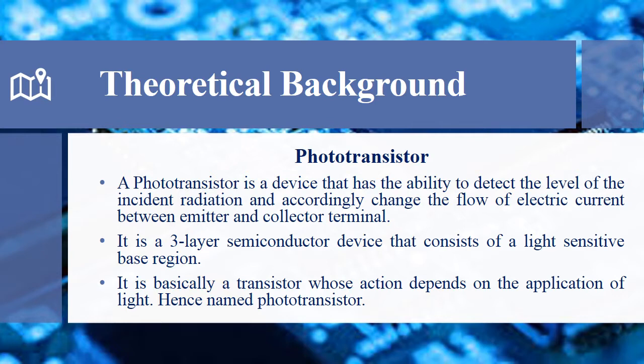A phototransistor detects the level of light intensity and changes the flow of electric current between the collector and emitter terminals accordingly. It is basically a semiconductor device with a light-sensitive base region. Like a normal transistor, a phototransistor also has three terminals: collector, base, and emitter. The base region of the phototransistor is light-sensitive.